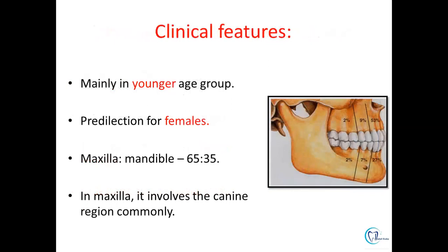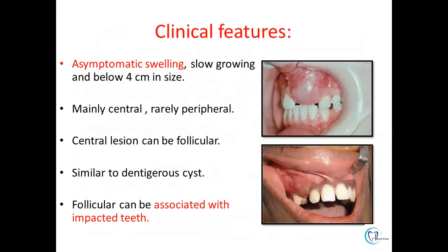Regarding clinical features, cases usually belong to the younger age group and there is a slight female predilection. The most common site is the maxilla, and within the maxilla, the most common location is the canine region. The clinical presentation is usually asymptomatic and slow growing. Most lesions are central, that is the intraosseous type, though some cases of peripheral variety can also be seen. Central lesions are usually associated with an impacted tooth and resemble dentigerous cysts in their clinical and radiological presentation.